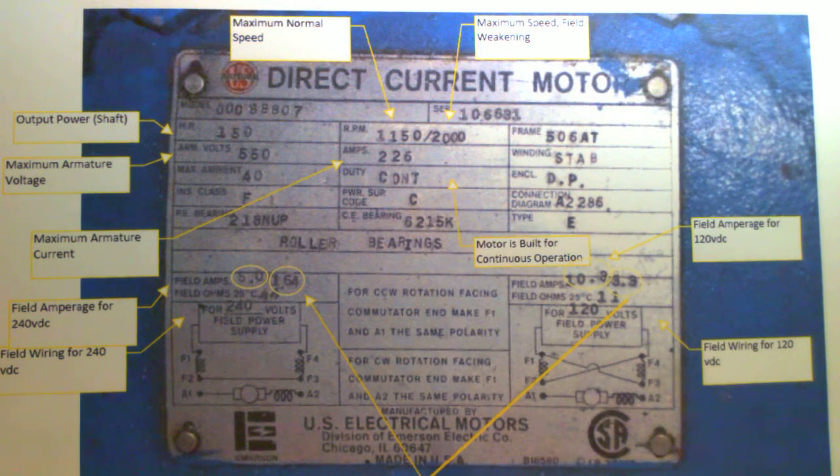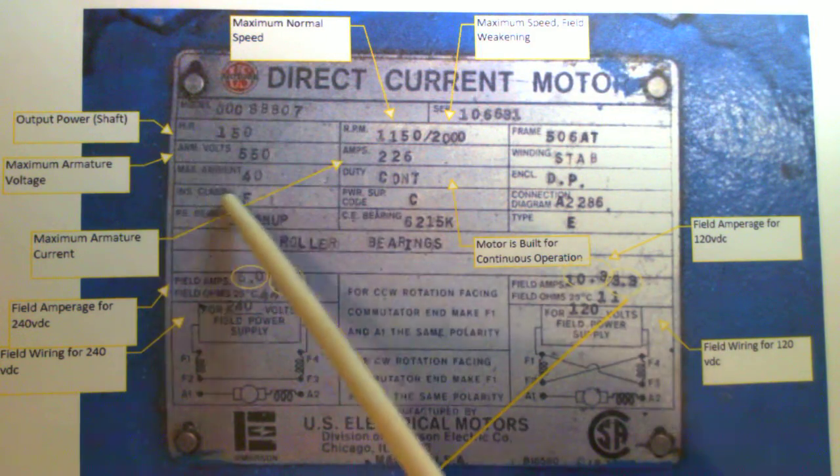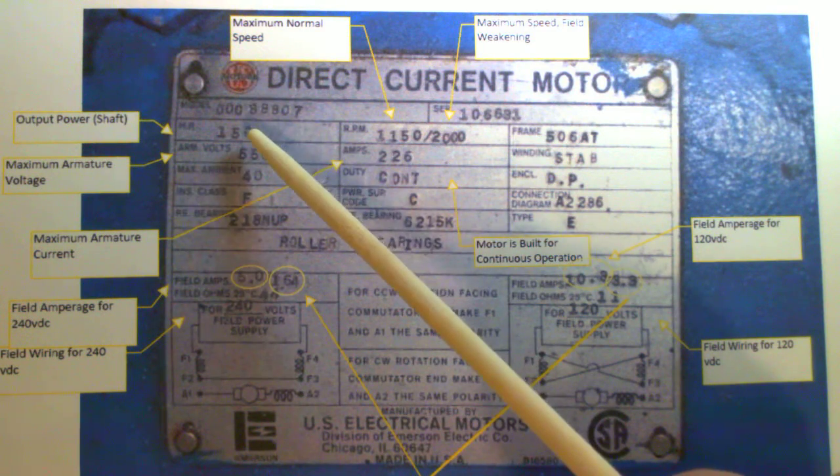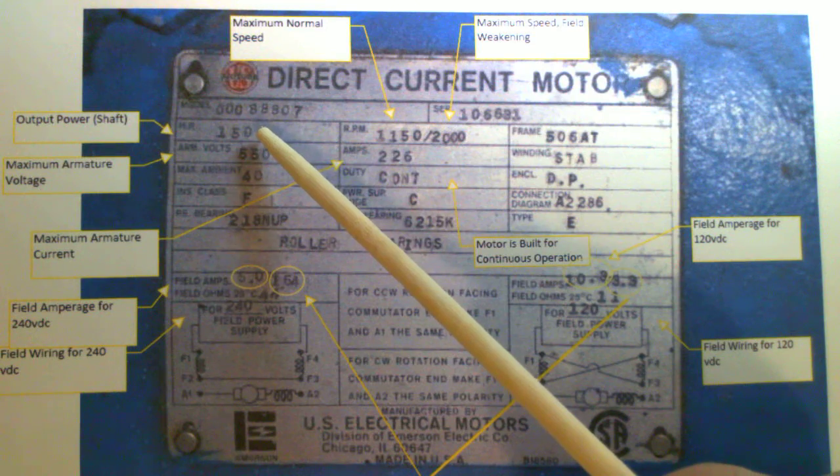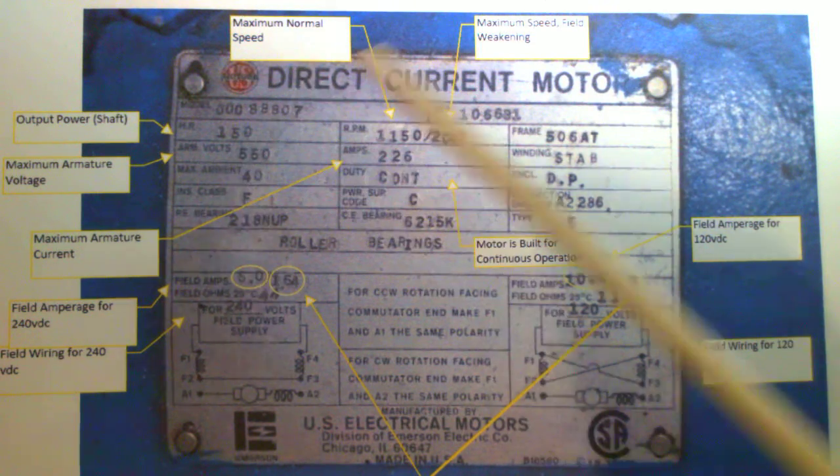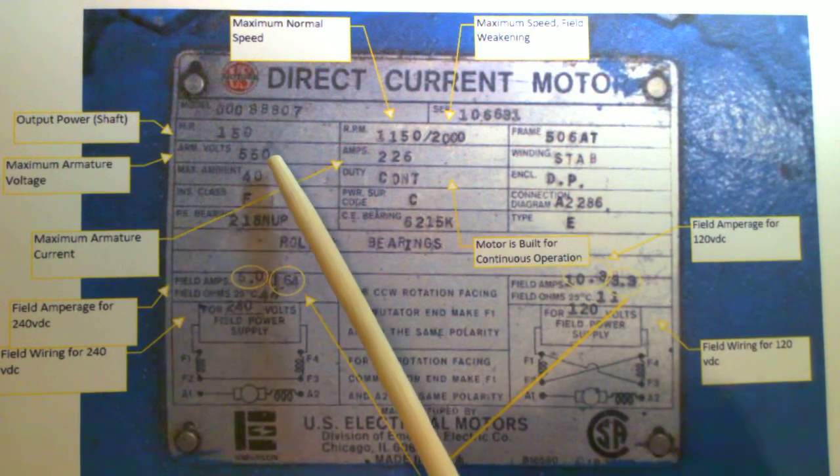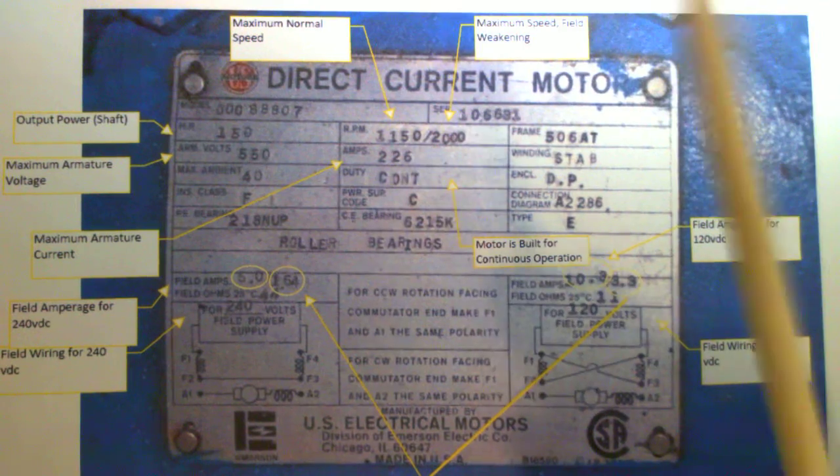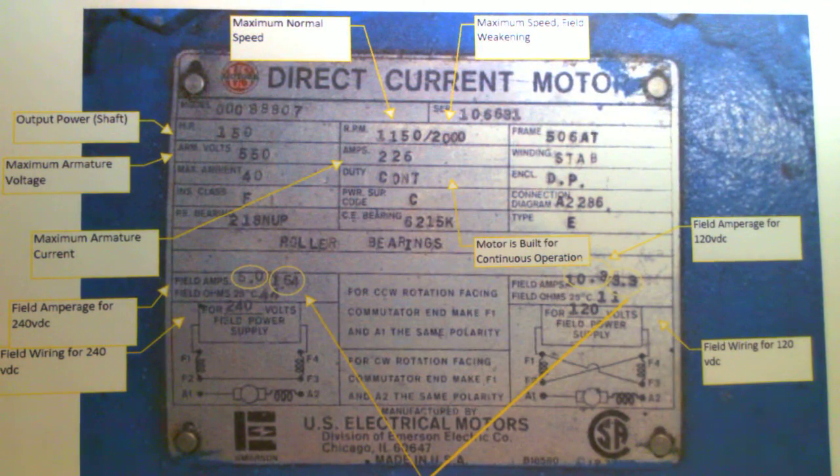So, all of this information that we did cover, such as horsepower, and that's the horsepower that this motor can deliver to its mechanical load. We talked about RPM's. We talked about armature volts, armature amperage. What we did not talk about was the fields.